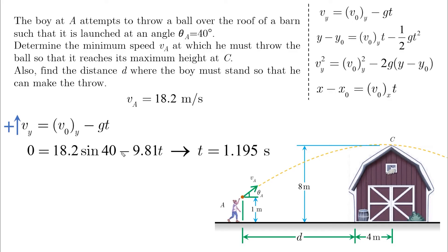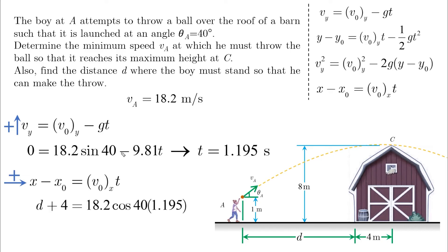And now, d will be the only unknown in the horizontal equation, with x minus x0 equals d plus 4, which is from start to finish. So, d is calculated to be 12.7 meters.